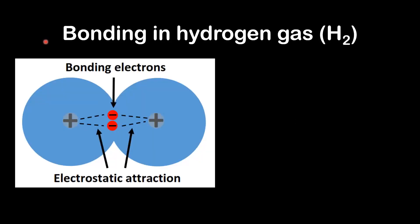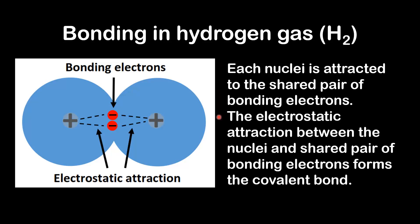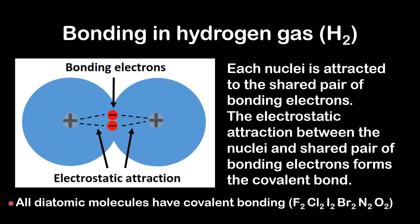Next we will have a look at the bonding in hydrogen gas, which is H₂. Here we have two atoms of hydrogen. Each atom has one electron, so the two atoms are sharing this pair of electrons. Each nucleus is attracted to the shared pair of bonding electrons. The electrostatic attraction between the nuclei and shared pair of bonding electrons forms the covalent bond.